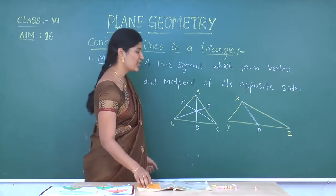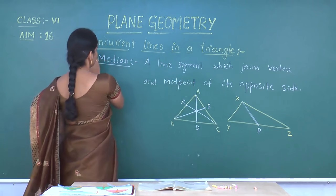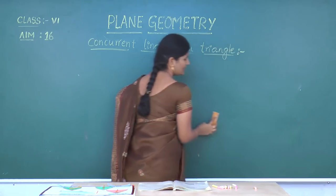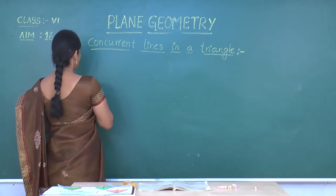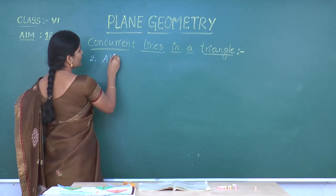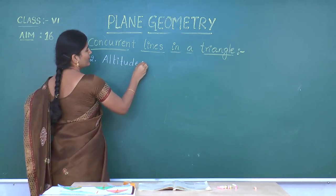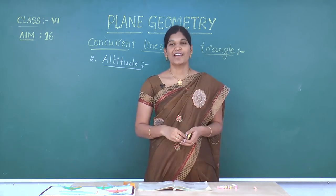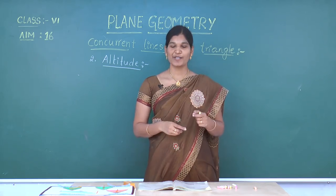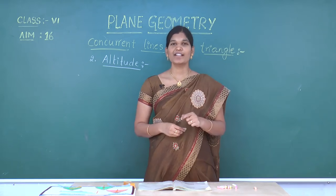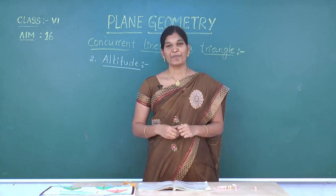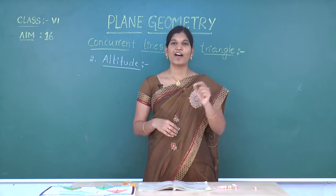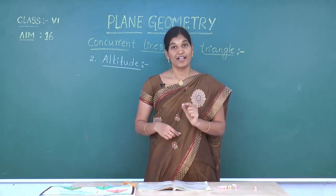Now let me explain about what is altitude. The second one is altitude. Altitude means the line segment which is passing through the vertex and makes 90 degrees with its opposite side. The line segment makes an angle of 90 degrees to the side, and if you join that point to its opposite vertex, then we will get the altitude.